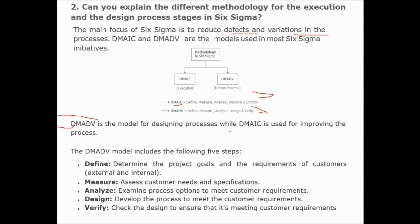DMADV, which is for designing a process, includes five steps. First, Define means determine the project goals and customer requirements. Measure means assess customer needs and specifications. Analyze means examine process options to meet customer requirements. Design means develop the process to meet customer requirements. And Verify means check the design to ensure it is meeting customer requirements.